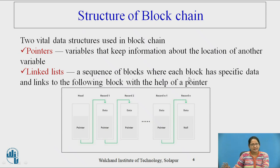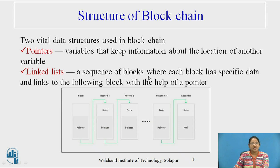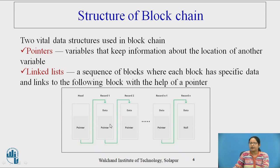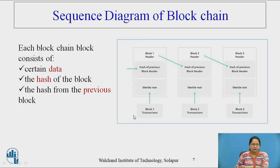What is the structure of blockchain? It is a data structure, and two vital things are used: one is a pointer — a variable that keeps information about the location of another variable, pointing to the next location — and a linked list, which is a sequence of blocks where each block has specific data and links to the following block with the help of a pointer. So a pointer points to the next block, which consists of data and again a pointer to the next block.